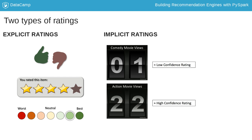Additionally, in some cases you may not have access to user behavior counts like this. A simpler form of ratings that still works with the ALS algorithm is the use of simple binary ratings. Rather than having a count of user actions, binary ratings just show whether a user has done something, like watched a comedy,